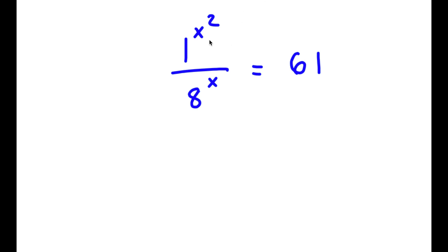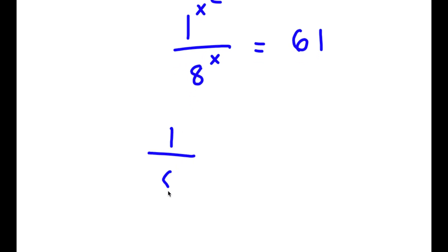On this problem, I have 1 to the power of x squared over 8 to the power of x is equal to 61. To solve this, first off, 1 to the power of any number is going to equal 1, meaning 1 to the power of x squared is simply equal to 1. So now I have 1 over 8 to the power of x is equal to 61.